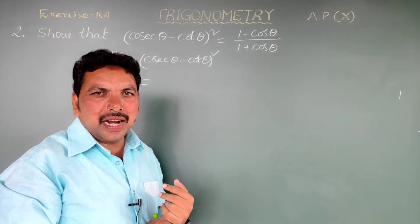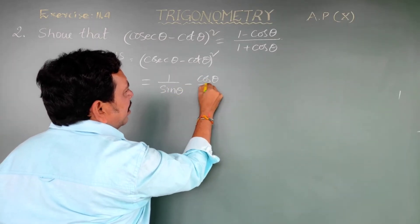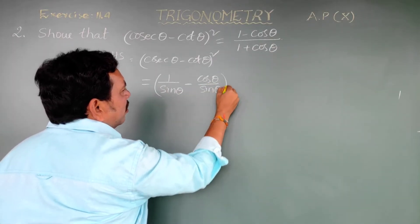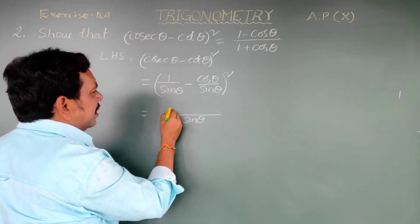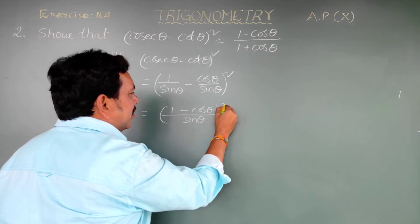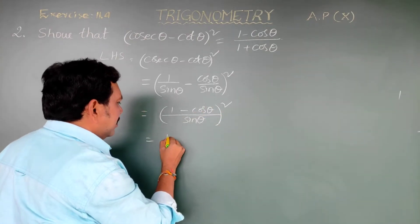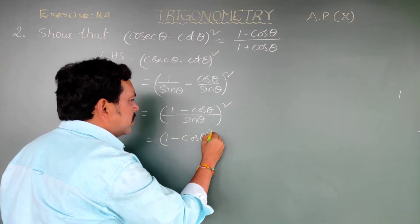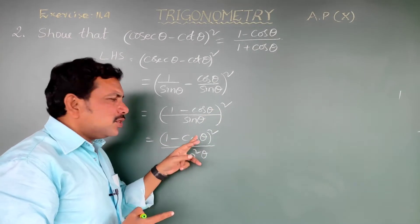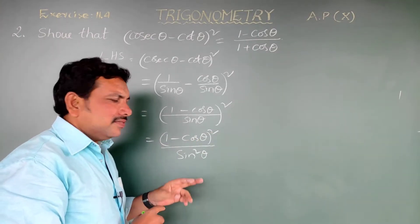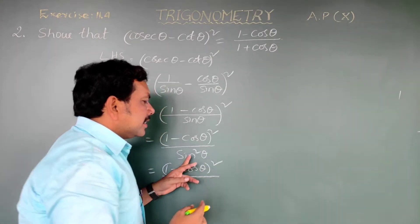Cosec theta means 1/sin theta, minus cot theta means cos theta/sin theta, whole square. The LCM is sin theta, so the remaining is 1 minus cos theta, whole square. That equals (1 - cos theta)² by sin²theta.